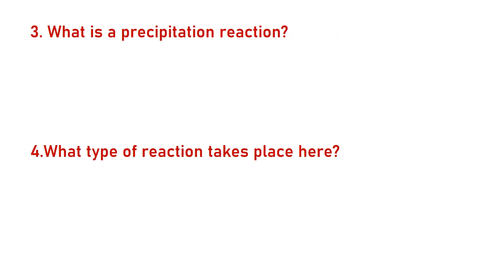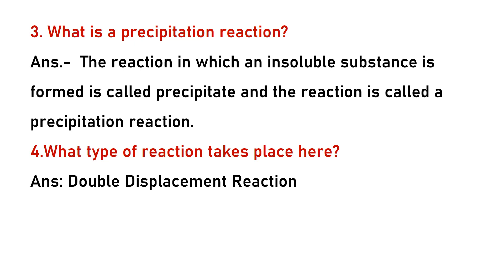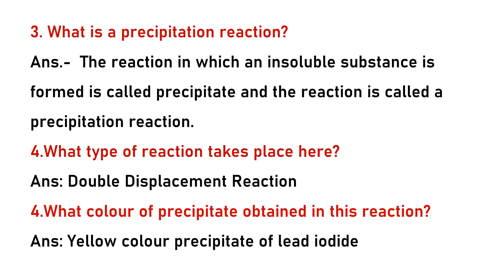What is a precipitation reaction? The reaction in which an insoluble substance is formed is called a precipitation reaction. Fourth question: what type of reaction takes place here? Double displacement reaction. Fifth question: what color precipitate is obtained? Yellow color — the precipitate is lead iodide, which is yellow in color.